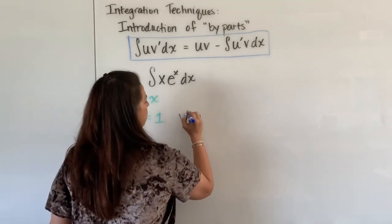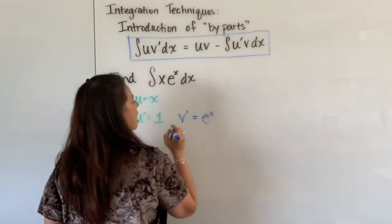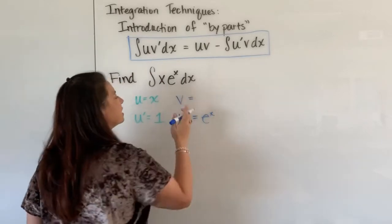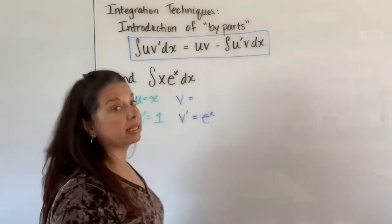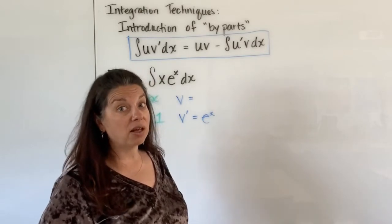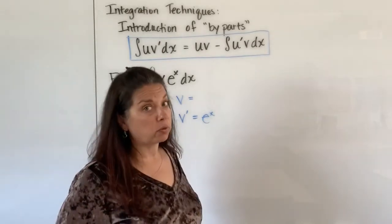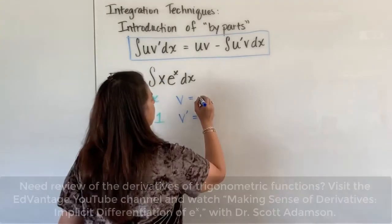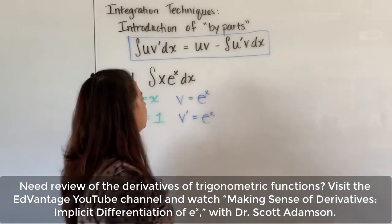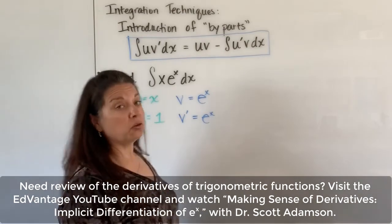And then the second function e to the x will be our v prime and now I need to think about well what's the anti-derivative of e to the x. Well this is one of the things that we love about e to the x is that its derivative and its anti-derivative are still just e to the x.